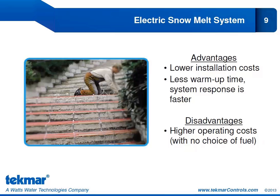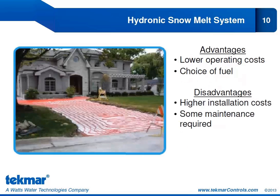The advantages of an electric snow melt system include a lower installation cost and a reduced warm-up time, meaning you'll have a faster system response. The disadvantage is that you have no choice of fuel — you are stuck with your electrical utility and are very susceptible to changing rates. The advantages of a hydronic snow melt system are that you have your choice of fuel. You can use alternative methods, combining it with a high-efficiency boiler, solar, or geothermal, which lowers operating costs. The disadvantage is a higher installation cost and potential maintenance requirements.